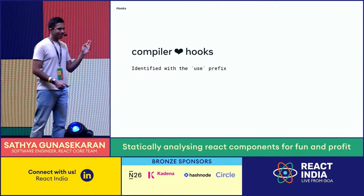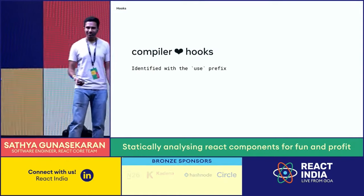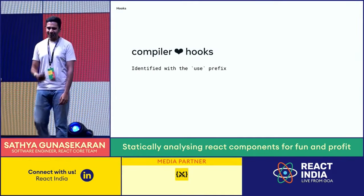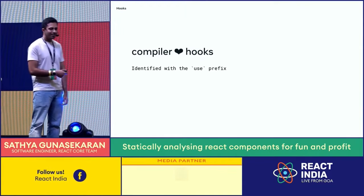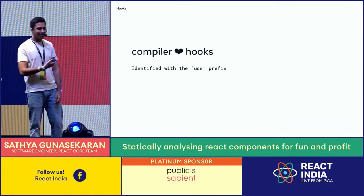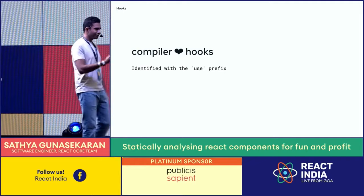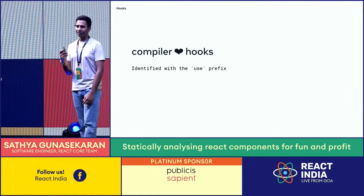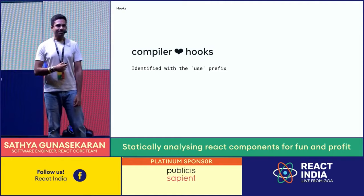We're living in the wild west of JavaScript — there's no type information, so even small cues matter. The `use` prefix is not just a name tag; it's a signal for the compiler, helping it spot what is a hook and triggering various optimizations.